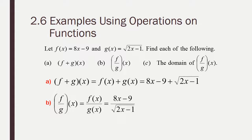For Part A, just put a plus in between the two functions. There's nowhere to combine like terms, no way to combine anything. So your answer is very simply 8x minus 9 plus the square root of 2x minus 1. For Part B, you're just going to put 8x minus 9 over the square root of 2x minus 1.